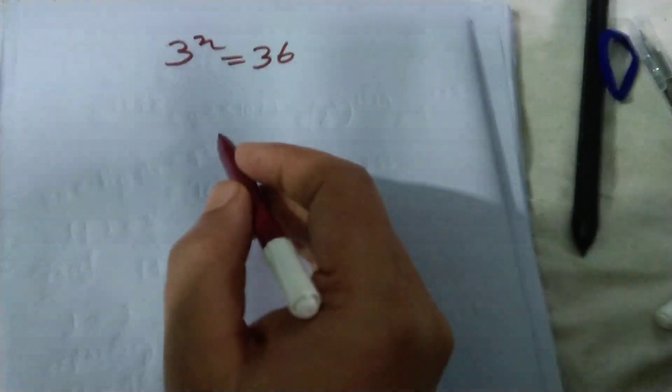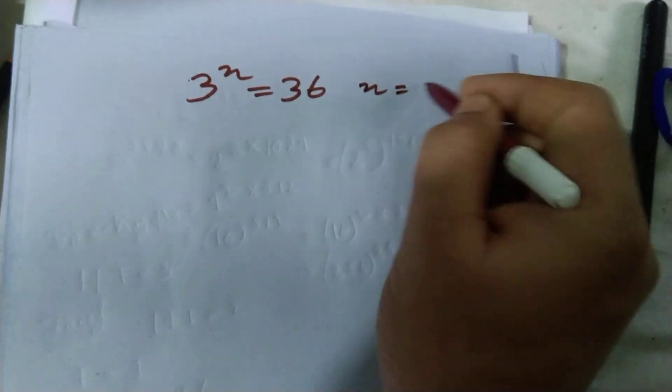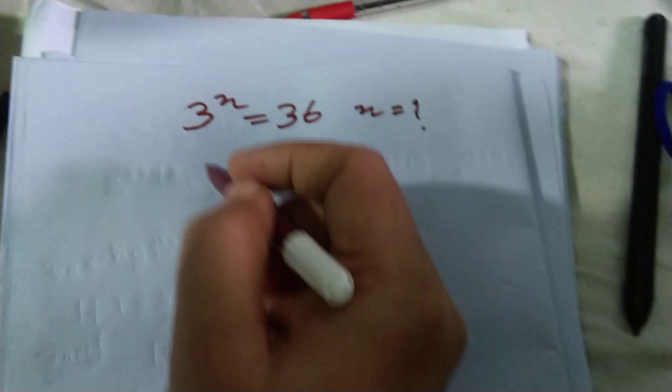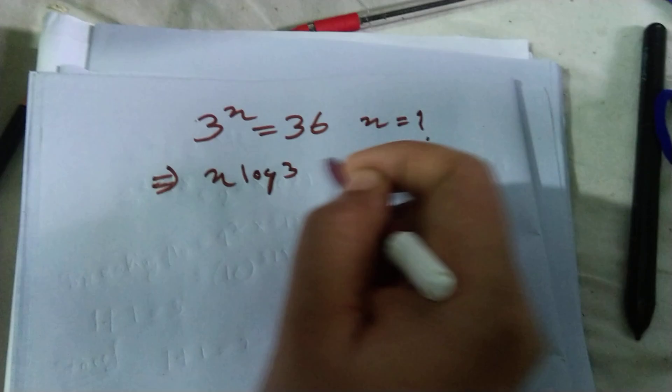Hello dear friends, welcome to my channel. Today's discussion is basic mathematics: 3 to the power x equals 36. Find x equals to what. We use logarithm on both sides, so x log 3 equals log 36.